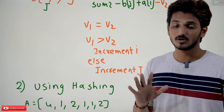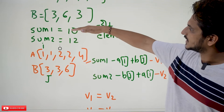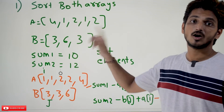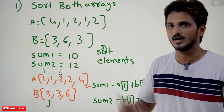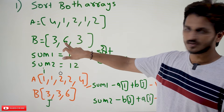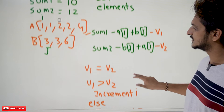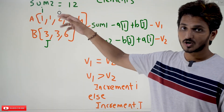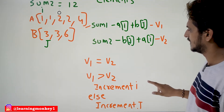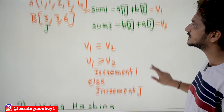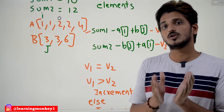Now understand the time complexity of this first logic. In order to sort the elements, there are n elements here — n log n. For any best sorting algorithm, the minimum time required is n log n. Similarly for the second array it is m log m, so total time complexity is n log n plus m log m. The traversal step is not greater than n log n, so overall time complexity is O(n log n + m log m). Since we are not using any extra space, the space complexity is O(1).